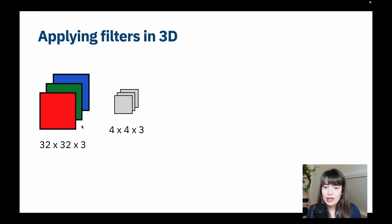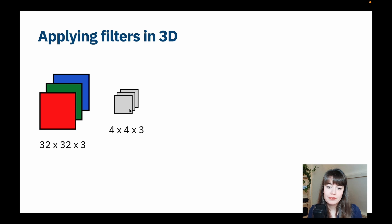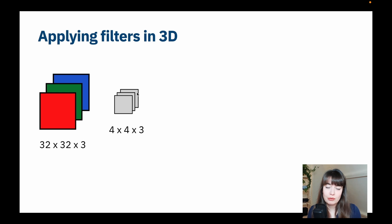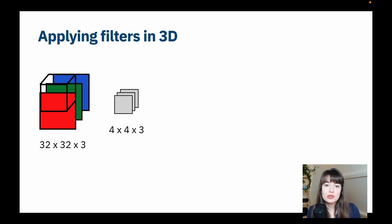So let's see how that would actually work in practice. Let's say this is our image — we have the red, green, and blue channels. It is a 32 by 32 image, so there are 32 pixels on the width and height, and it has three layers. If we want to apply a 4x4 filter, then we're going to have a filter that has 4 values by 4 values, and again it will have three layers on top of it. So you can think of this filter basically like a cube. And when you want to apply these filters to the red, green, and blue channels, you basically put this cube on top of these channels and then calculate the values.